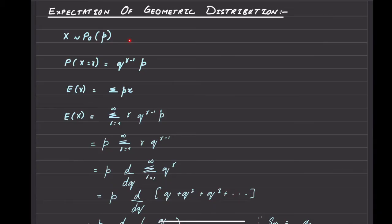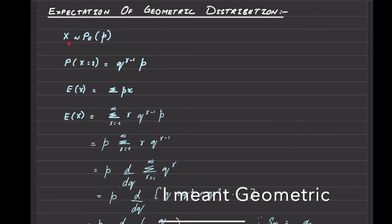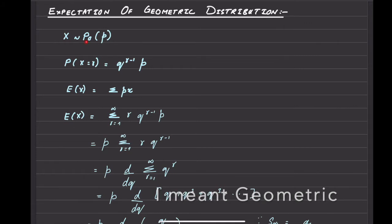In this video we're going to talk about the derivation of the expectation and the variance of the geometric probability distribution. If a random variable x follows a geometric distribution with p being the probability of success...